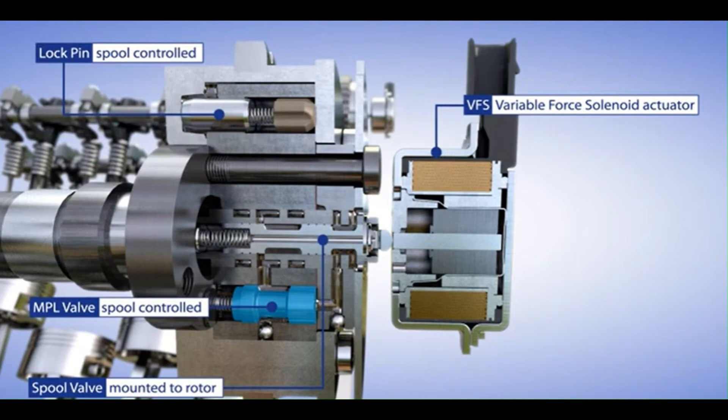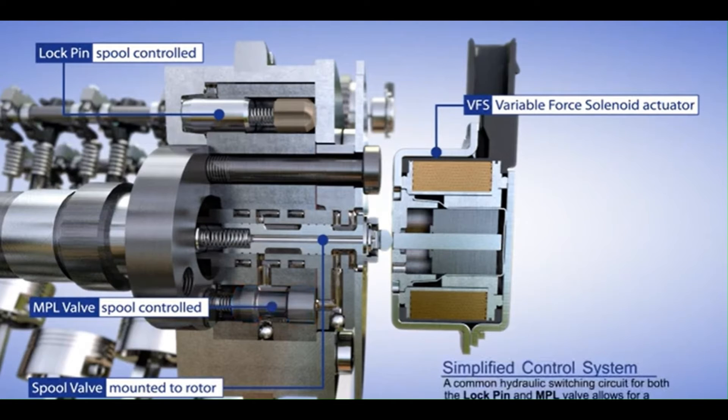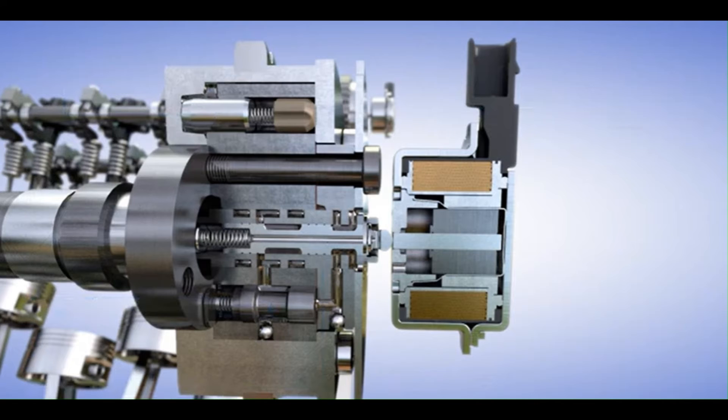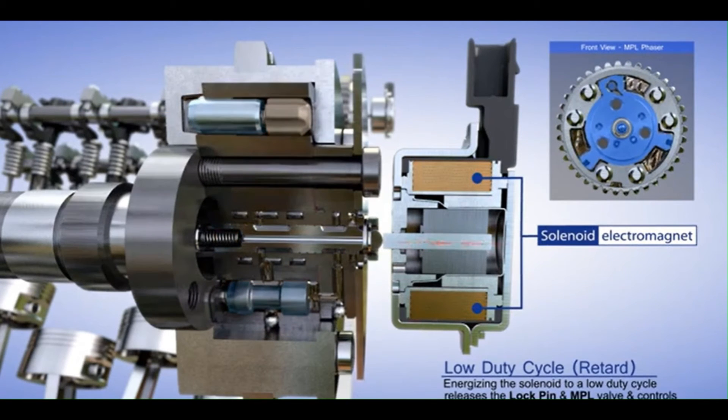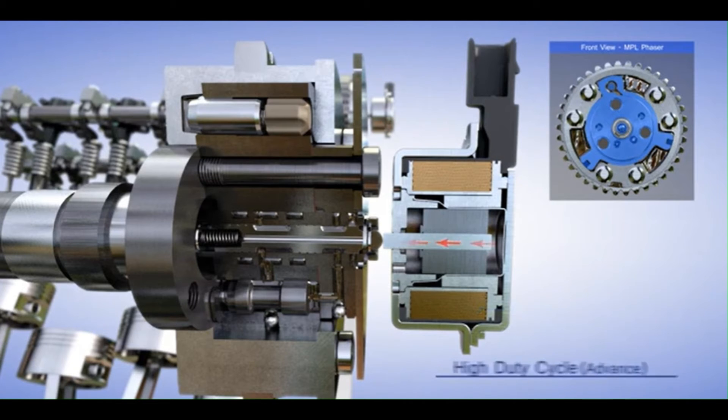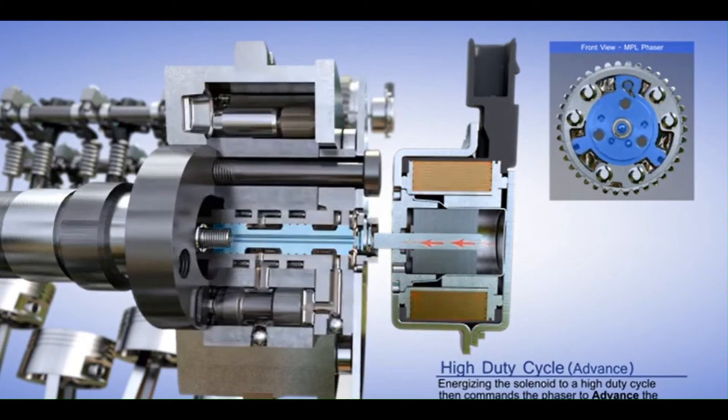3. Valve Train Inertia. The energy needed to overcome the inertia of the valve train, particularly the springs, also leads to energy losses. The valve springs resist the camshafts' motion as they are compressed, and releasing this stored energy as the valve closes is not perfectly efficient. This can be particularly significant at higher engine speeds, where the valves are opened and closed rapidly, increasing the energy required to compress the springs.